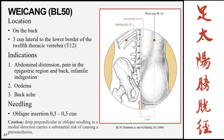The next point is Weicang, Bladder 50, located on the back three cun lateral to the twelfth thoracic vertebra. Indications include abdominal distension, pain in the epigastric region, infantile indigestion, edema, and backache due to its proximity to the lower back. Insertion is oblique 0.3 to 0.5 cun with caution against deep perpendicular or oblique needling in a medial direction.